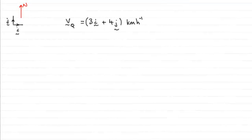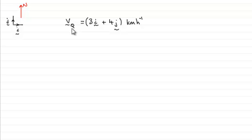For this part of the question, we're given unit vectors i and j in the directions of east and north respectively. The velocity of ship Q, which I've called vq, is given by the vector 3i + 4j kilometres per hour. We need to find the bearing that Q is heading on.